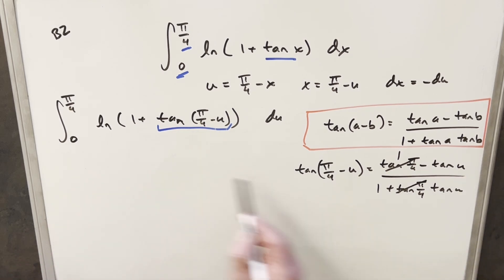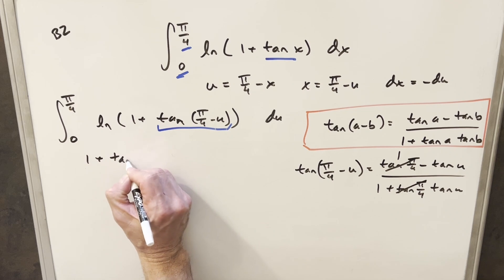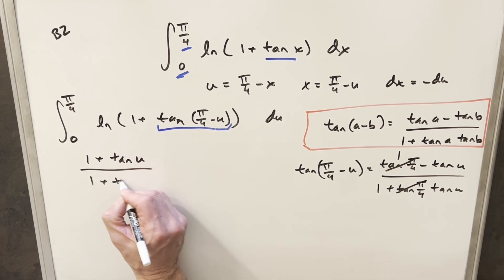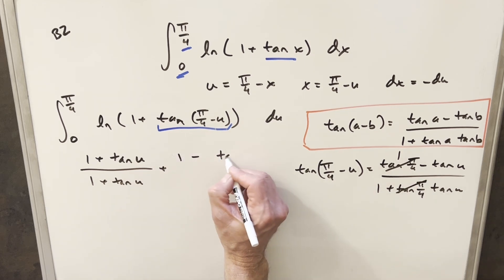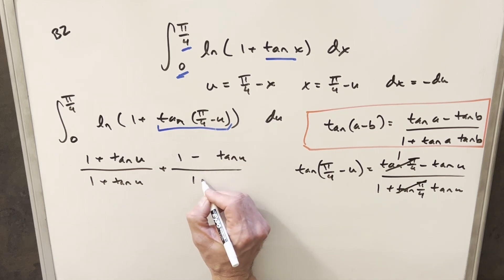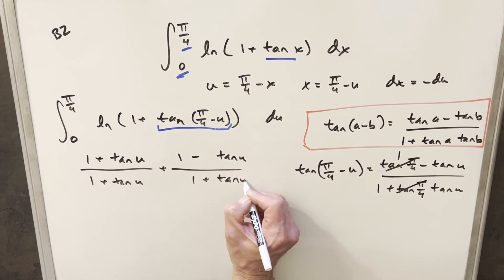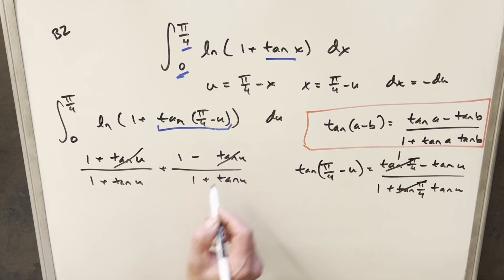So I think what I want to do is take this 1 and add it to this. So for 1, I can get a common denominator. I can write my 1 as 1 plus tan U over 1 plus tan U, just in order to combine it with this thing, where we have 1 minus tan U over 1 plus tan U. But when we put these together under the same denominator, the tans are going to cancel, and this is just going to give me 2 over 1 plus tan U.